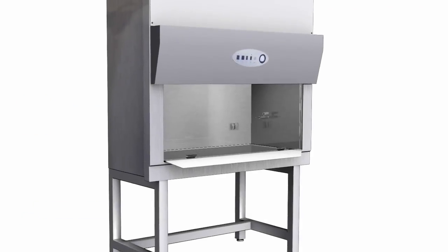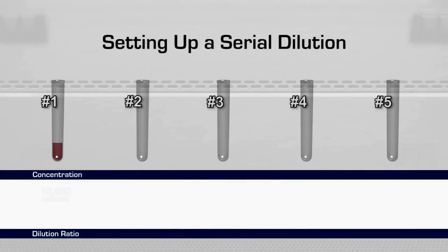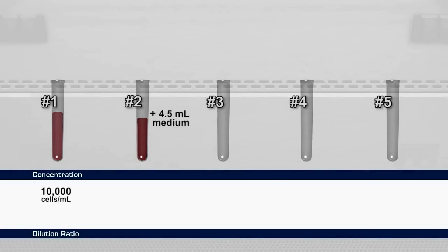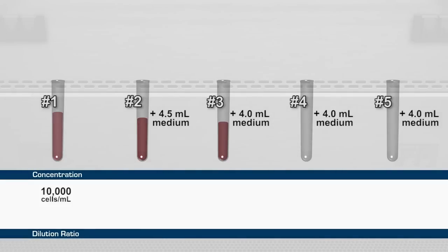To perform a serial dilution, we need 5 labeled tubes. Our first tube contains a concentration of 10,000 cells per milliliter. Add 4.5 milliliters of cultured medium to tube number 2 and 4.0 milliliters of medium to tubes 3, 4, and 5.